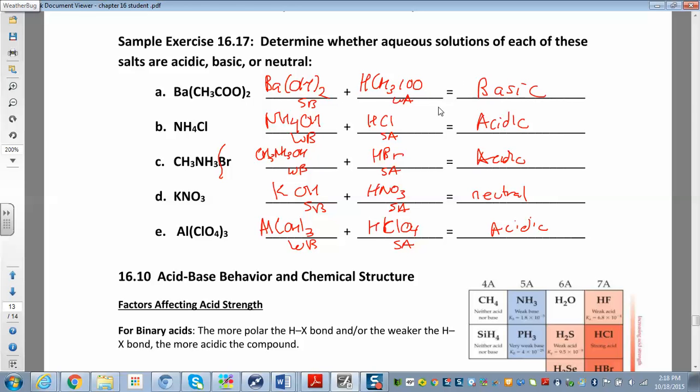Strong base, weak acid is going to give you something that's basic. A weak base and a strong acid will give you something acidic. So it's always looking like the strong thing. If you have two strong things, so you have a strong acid and a strong base, it's going to be neutral. I'm not really going to give you two weak things unless I give you the Ka and the Kb.